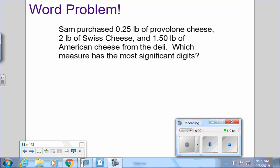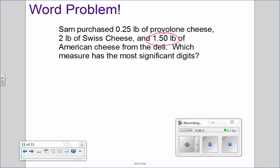Sam purchased 0.25 pounds of provolone cheese, two pounds of Swiss cheese, and 1.5 pounds of American cheese from the deli. Which measure would have the most significant digits? I know which one. Candace, what do you think? The 1.50, yeah. So that's three significant digits, so the American cheese. That's it. I thought they were going to have us actually calculate something.